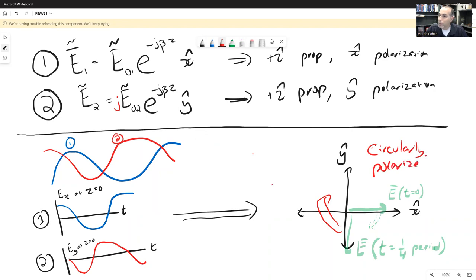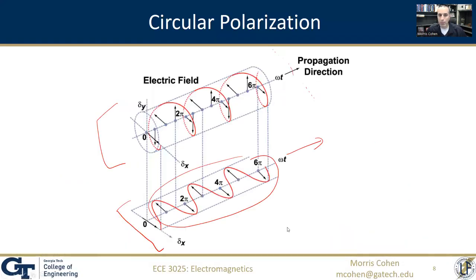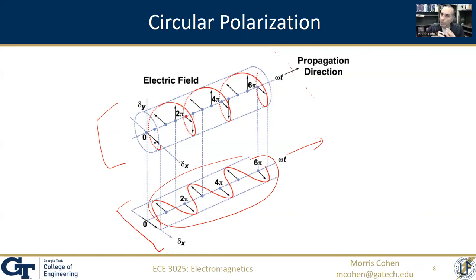At any given moment there is always an electric field, and its magnitude stays constant — it just rotates. Going back to the original diagram, if you stand at one position and the entire red helix slides to the right, the electric field you measure at your position rotates in a circle. That is circular polarization.